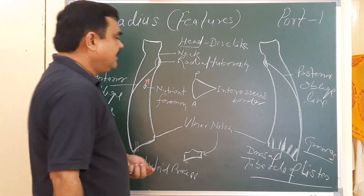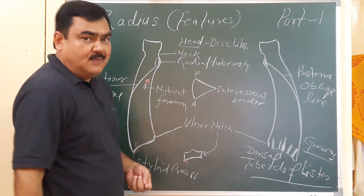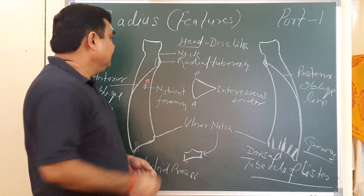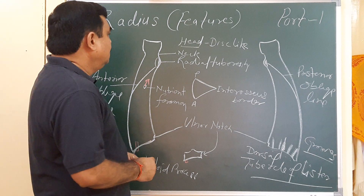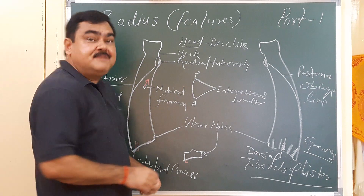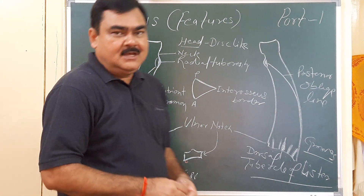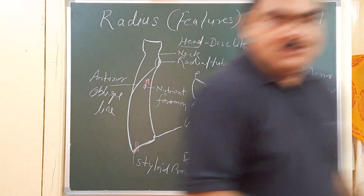So the shaft has three surfaces and three borders. This is all about the features of the radius. Thank you.